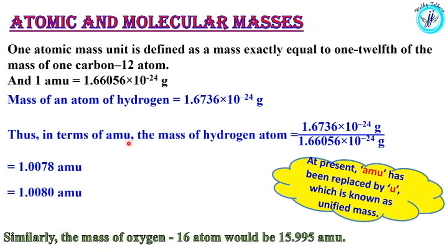In terms of amu, we divide by 1 amu: that is 1.6736 × 10⁻²⁴ g divided by 1 amu, which equals 1.66056 × 10⁻²⁴ g. We get the answer: that is 1.0078 amu. The mass of an atom of hydrogen in amu is 1.0078.